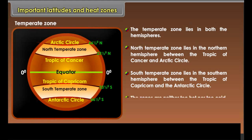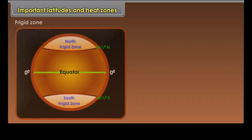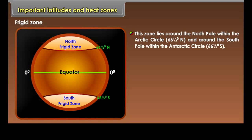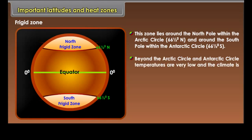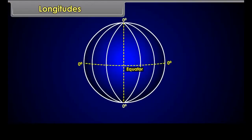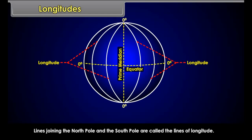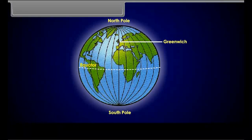The temperate zones are neither too hot nor too cold. The Frigid Zone lies around the north pole within the Arctic Circle at 66 and a half degrees north, and around the south pole within the Antarctic Circle at 66 and a half degrees south. Beyond the Arctic Circle and Antarctic Circle, temperatures are very low and the climate is very cold. This is due to the extreme slanting of the sun's rays. Frigid means cold — this is a very cold zone.